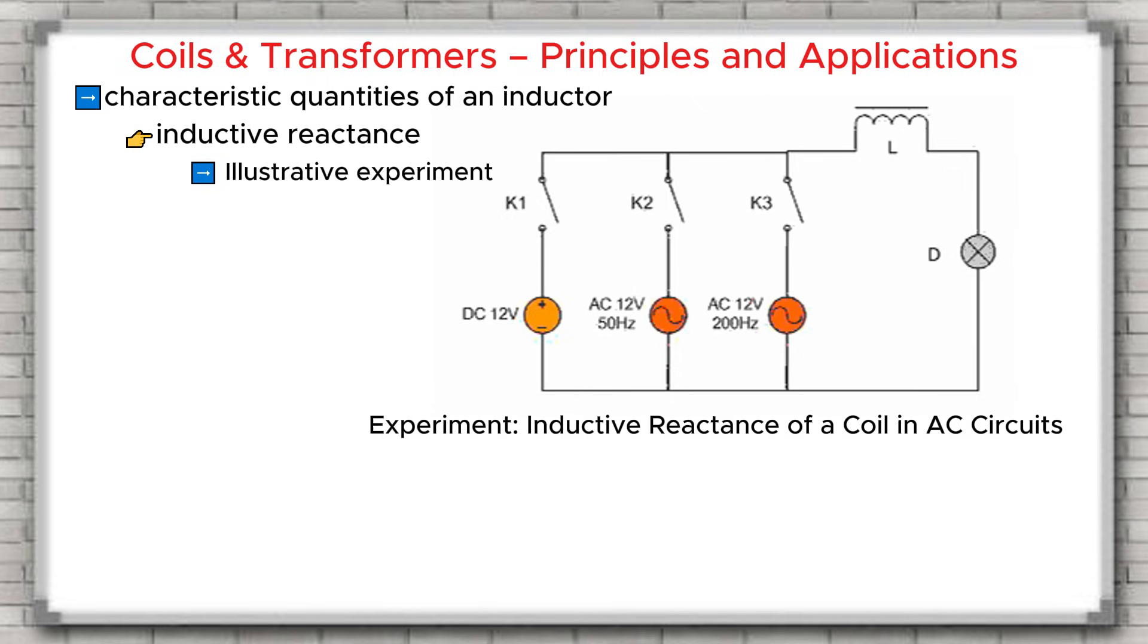Now let's do an experiment to illustrate inductive reactance. In this experiment, a coil is connected in series with a light bulb and then connected to a 12 volt power supply. This power supply has different frequencies and is controlled through the switches K1, K2, and K3. When K1 is closed, a direct current flows through the coil. At this moment, the inductive reactance ZL equals zero. Therefore, the current through the coil is the strongest and the bulb glows the brightest.